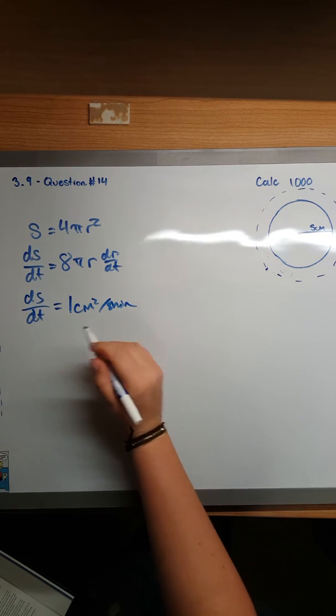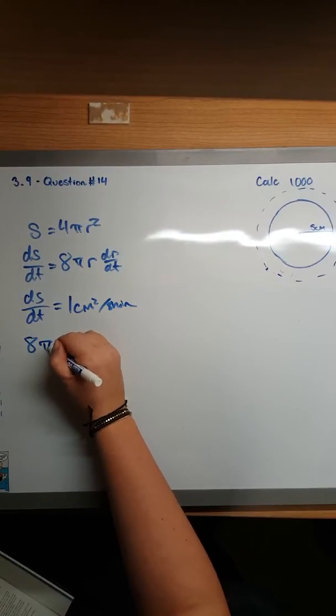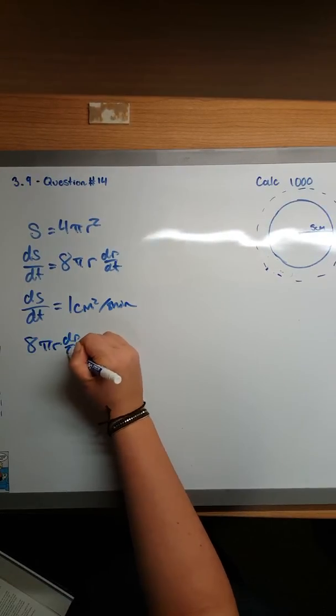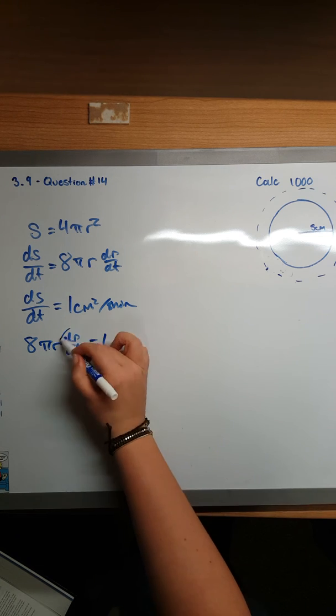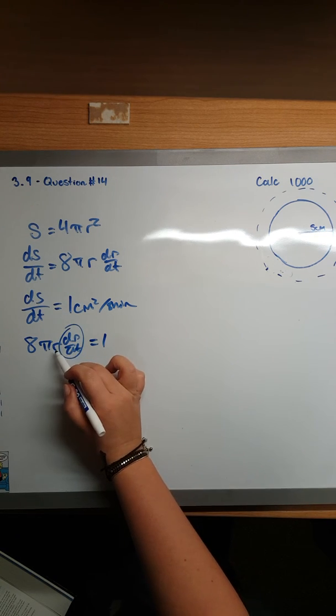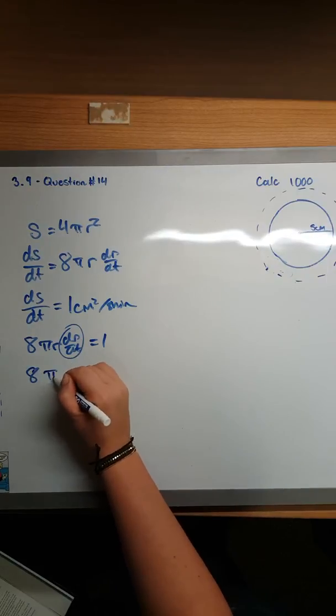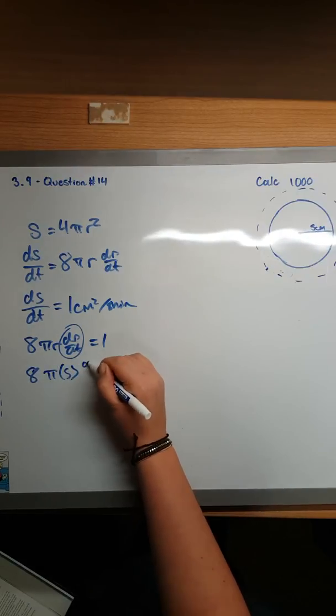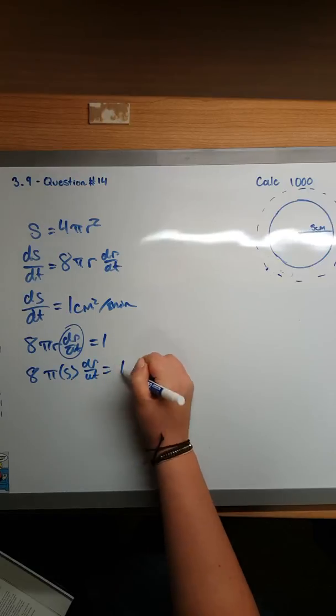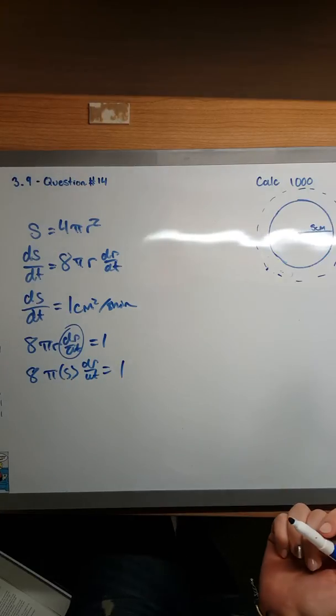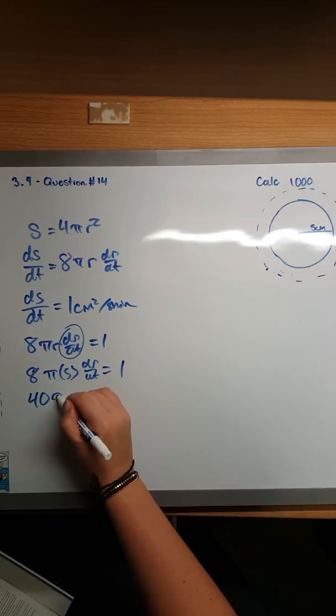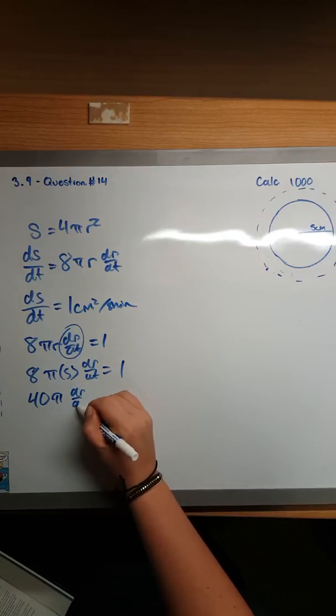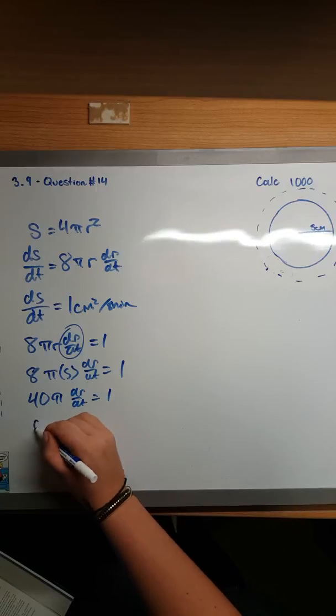We're going to set those two equal to each other: 8πr(dr/dt) equals 1. We're trying to find this, so we already know what the radius is—it is 5. So 8π times 5 times dr/dt equals 1.